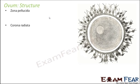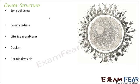The important layers of the ovum are: zona pellucida, corona radiata, vitaline membrane, ooplasm, germinal vesicle, and germinal spot. These are the important parts of the ovum. Let us see where each of them are located.